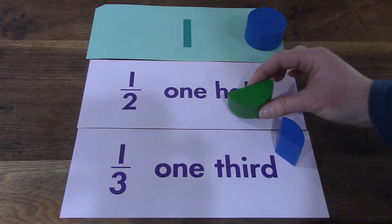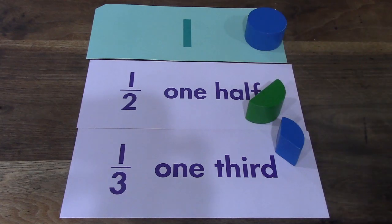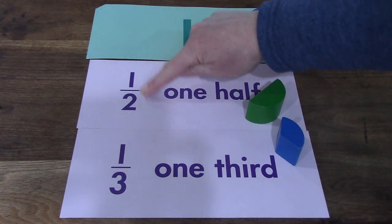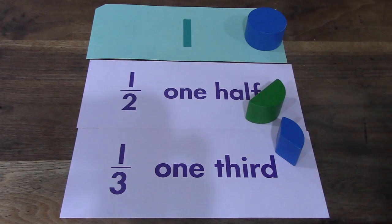That's right. It's one-half of a circle. It has one out of the two pieces that it needs.